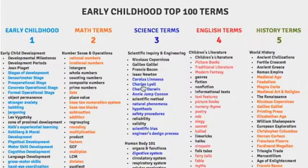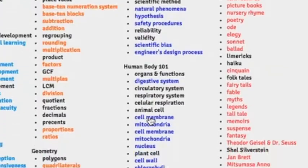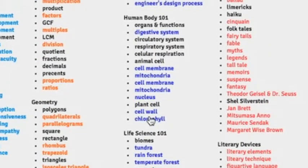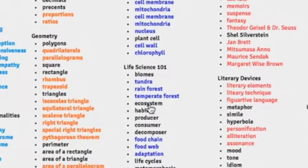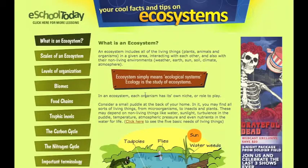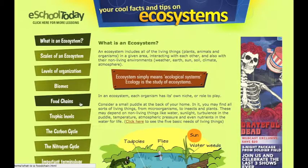In Science, if you scroll down to Ecosystems — a big idea — you could click on it and it would open up into a website on ecosystems. And if you read it closely, you'll also see it has biomes and food chains.